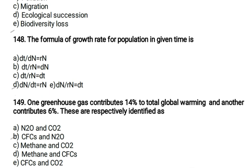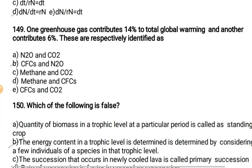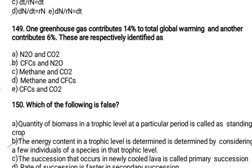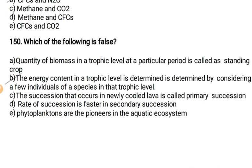One greenhouse gas contributes 14% of total global warming and another contributes 6% — these are respectively CFC and N2O. The false statement is: 'The energy contained in a trophic level is determined by considering a few individuals of species in that trophic level.' The correct statements are: quantity of biomass at a trophic level at a particular period is called a standing crop; succession in newly cooled lava is called primary succession; rate of succession is faster in secondary succession; and phytoplanktons are the pioneers in aquatic ecosystems.